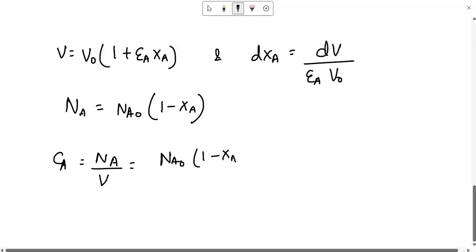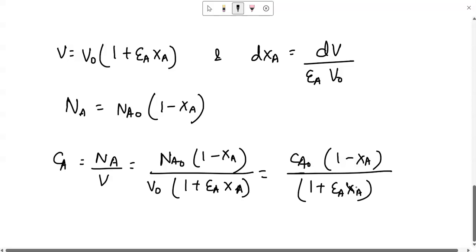Now writing the concentration term, CA is nA by V or simply nA0(1-XA) divided by V0 into (1 + epsilon A XA). So now you can write this as CA0(1-XA) by (1 + epsilon A XA). This is going to give you the relation between conversion XA and the concentration for isothermal varying volume system, and we are going with the linearity assumption.